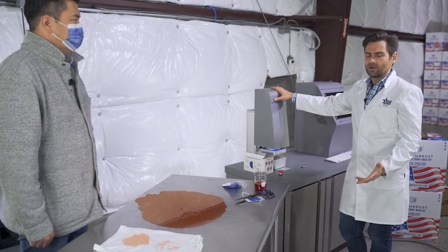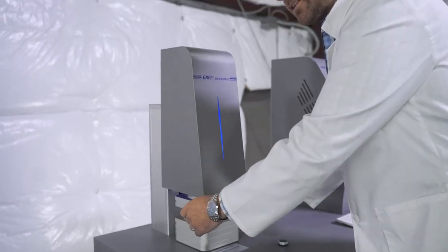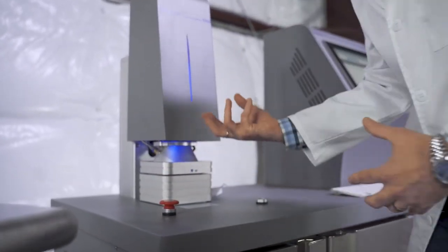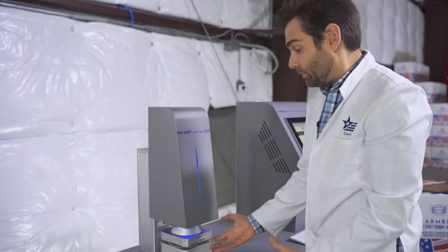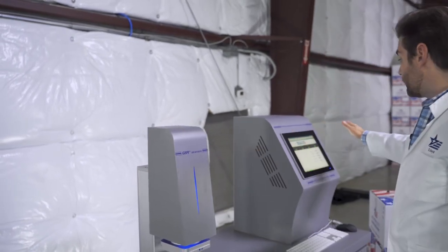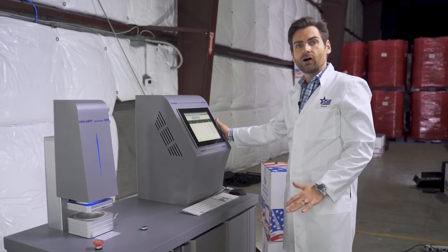So it's 0.1 micron latex particles. So we put the mask in here, we clamp this down. It creates a seal around the mask. And then we shoot those tiny microscopic particles up through this where there is a photo sensor. And that photo sensor reads on this screen and tells us how good our masks are.